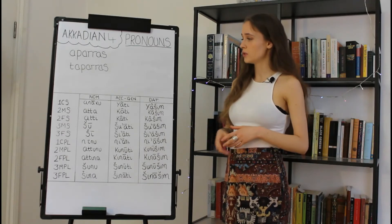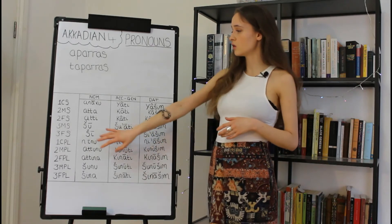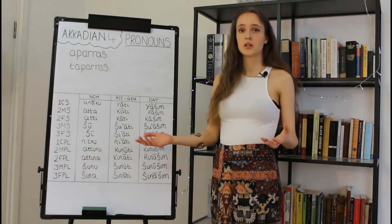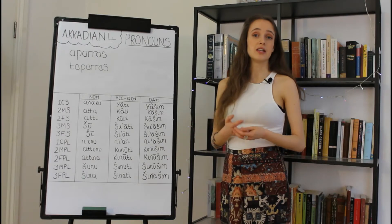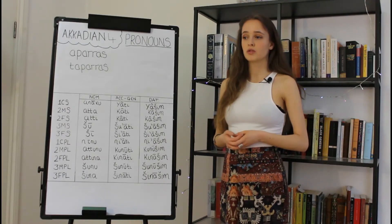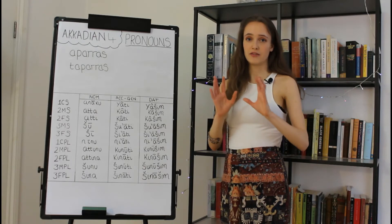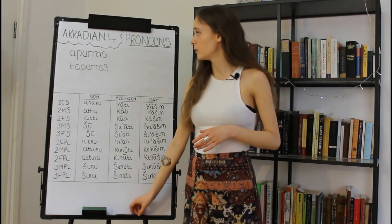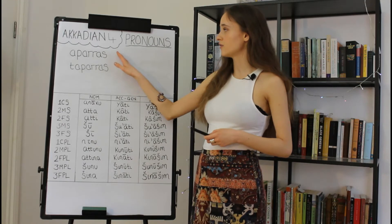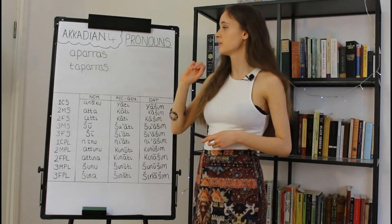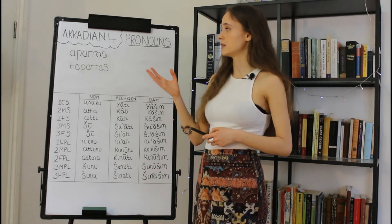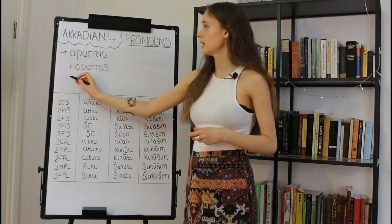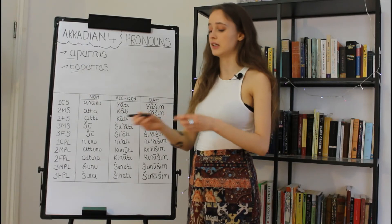For our nominative pronouns, these usually form the subject of a sentence and are translated as I, you, he, she, it, etc. It's important to remember in Akkadian that our verbs already inflect to refer to person. For example, the two verbs on the board roughly translate as 'I divide' and 'you divide' — the subject is already implicit because of the prefixes: the 'a-' prefix indicating first common singular and the 'ta-' prefix indicating second masculine singular.